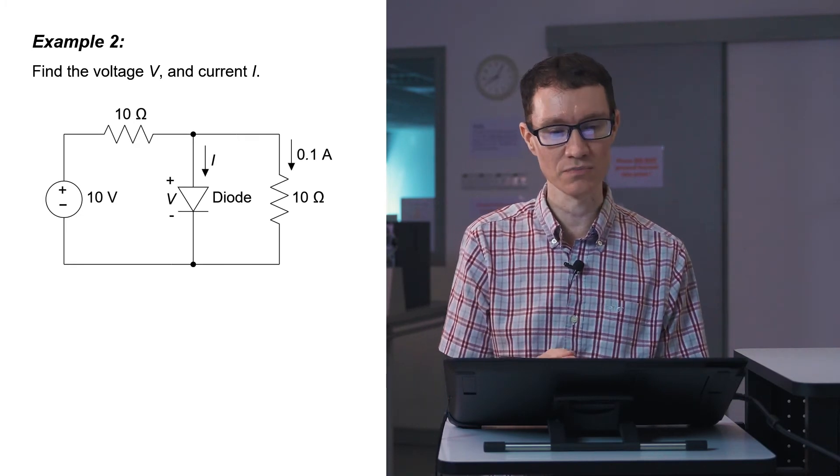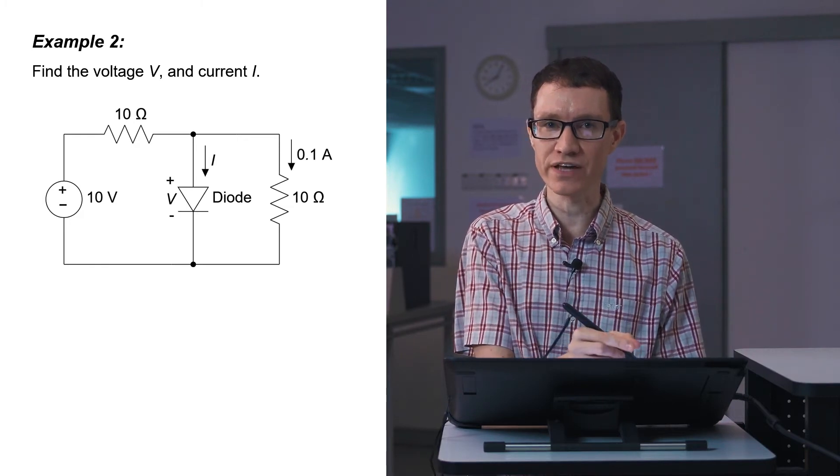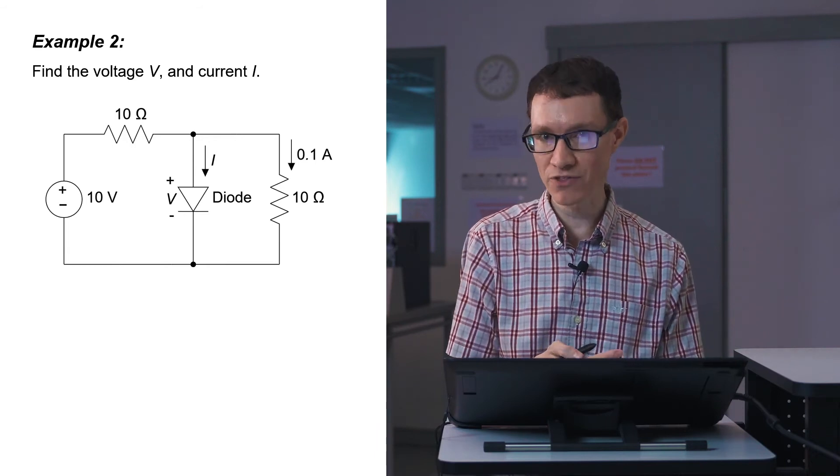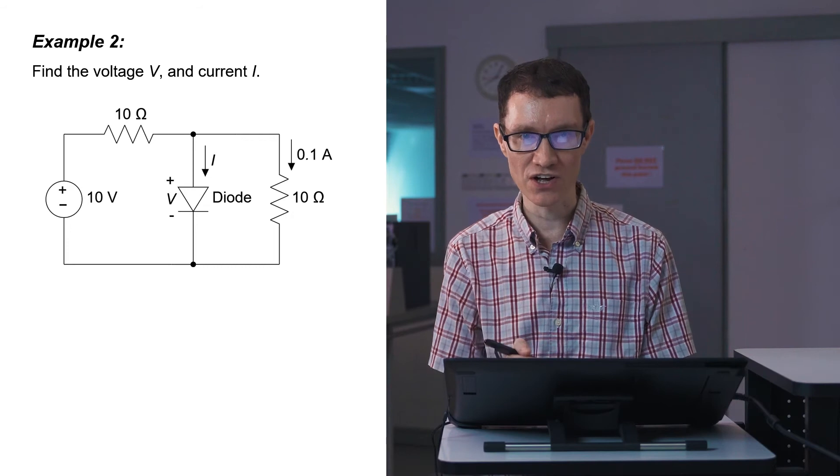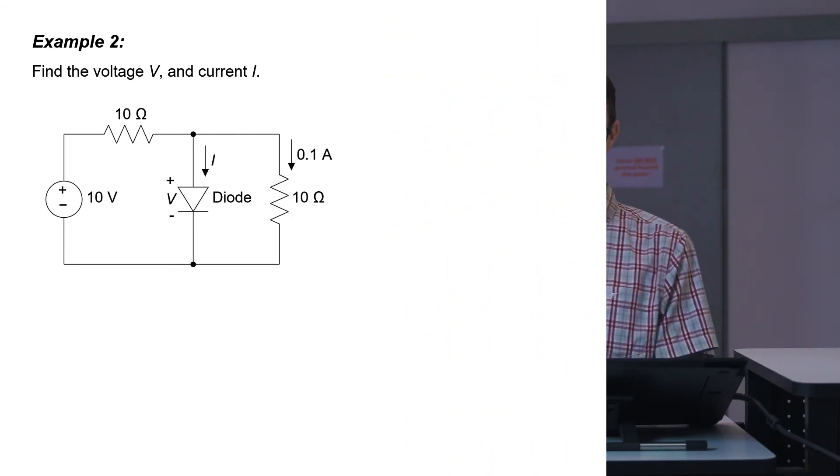I cannot say that V equals IR because R essentially is meaningless in the case of a diode. A diode is a nonlinear circuit element. We're going to have to find some other equation to write for the diode or to find the voltage and the current using some other method. Since this video is about the Kirchhoff voltage law and the Kirchhoff current law, let's use those in order to find these unknown quantities.